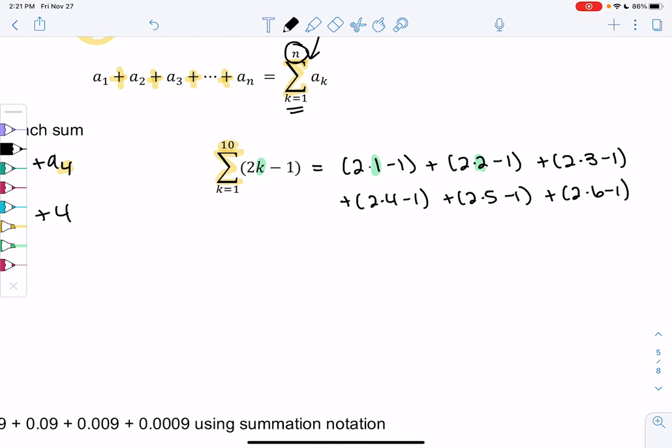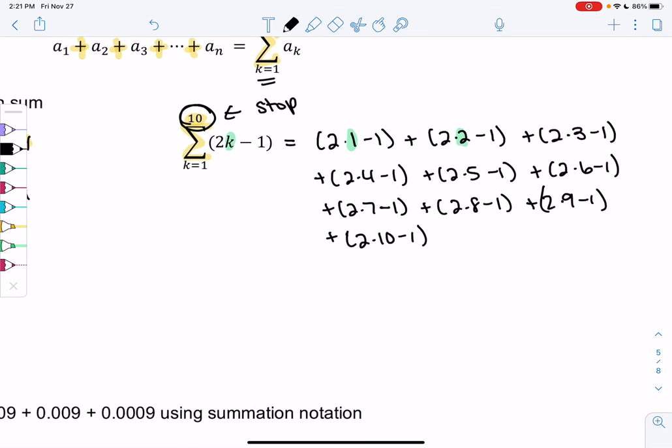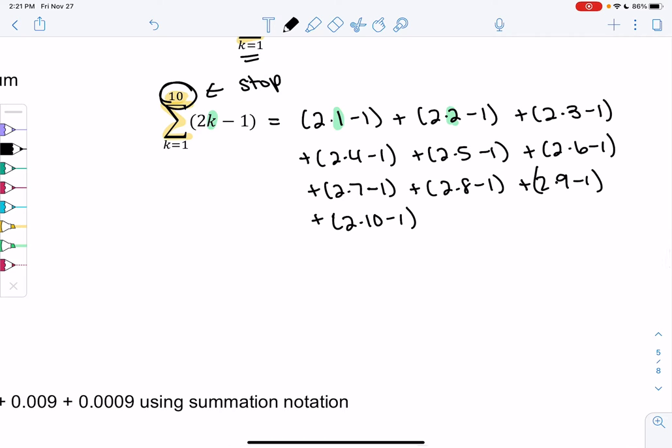If you feel like you could finish this, pause the video and give this a try. 2 times 7 minus 1. 2 times 8 minus 1. 2 times 9 minus 1. And then my 10th term would be 2 times 10 minus 1. 10 tells us where to stop. So this is my sum. I'm going to at least simplify these. But we don't need to add it up. We're just practicing again, understanding the notation.